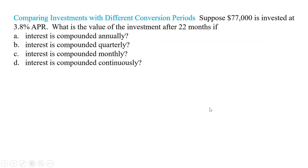Now let's compare investments with different conversion periods. Suppose we have $77,000 invested at a 3.8% APR. What is the value of the investment after 22 months if it's compounded annually, compounded quarterly, compounded monthly, and compounded continuously?